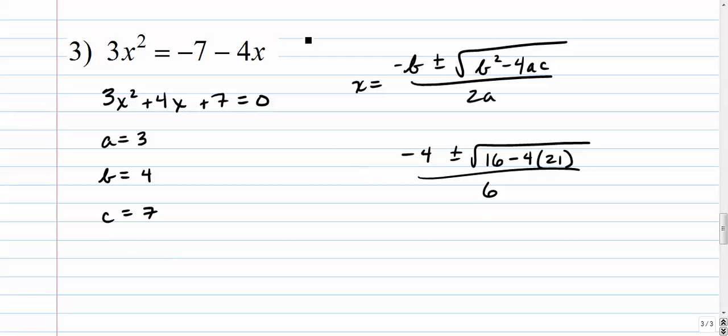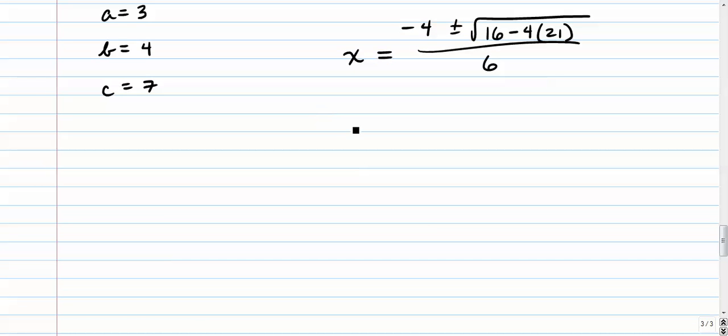So our x value is equal to those two solutions. Let's figure out what the heck they are. Negative 4 plus or minus. 16 minus 84. 16 minus 84 is going to be a negative. Let's see here. Negative 68 in our radical there. All right, so we have negative 68 over 6.